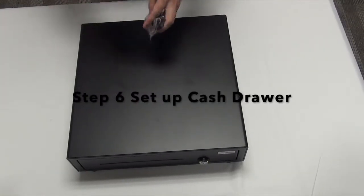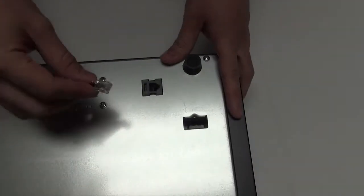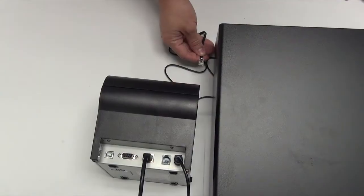Step 6. Find a cable from the cashier drawer. Turn it over and plug into the cable. Then connect it to the printer.